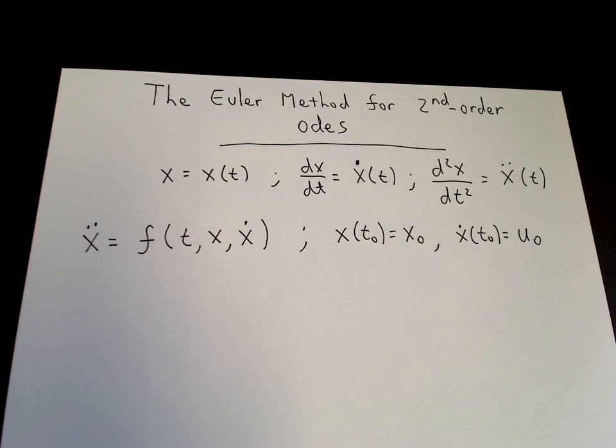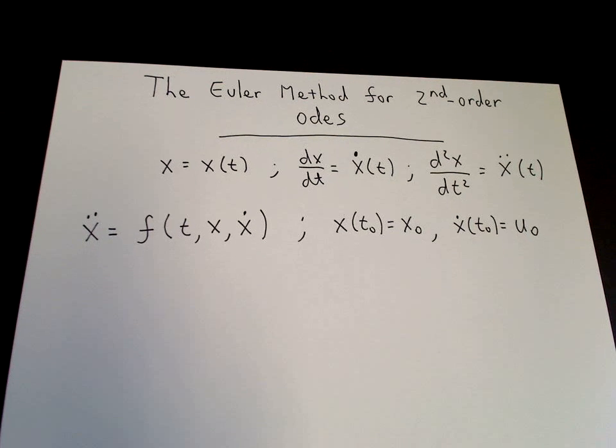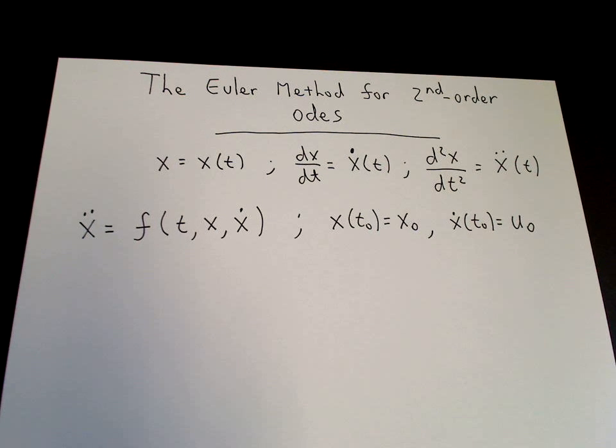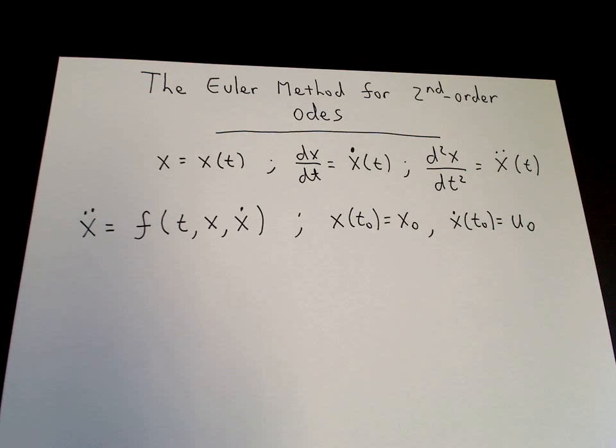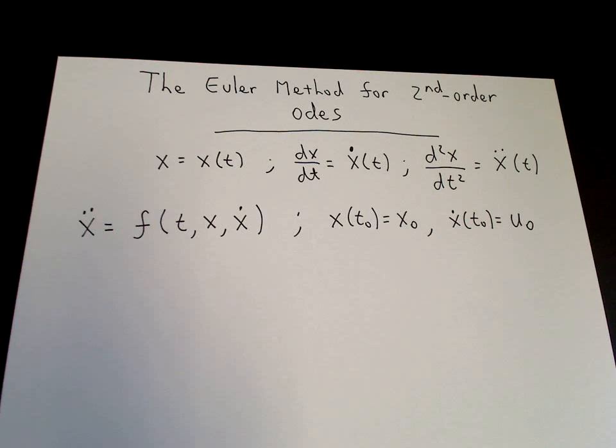So t naught, x naught, and u naught are supposed to be given. Okay, so to write the second-order equation as a system of first-order equations we use a trick.